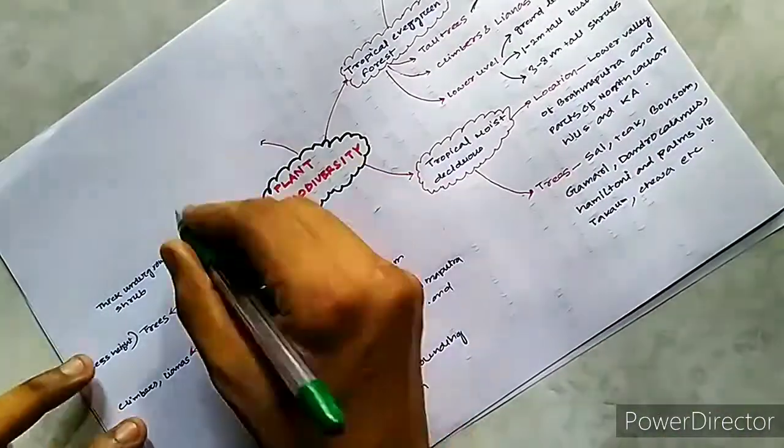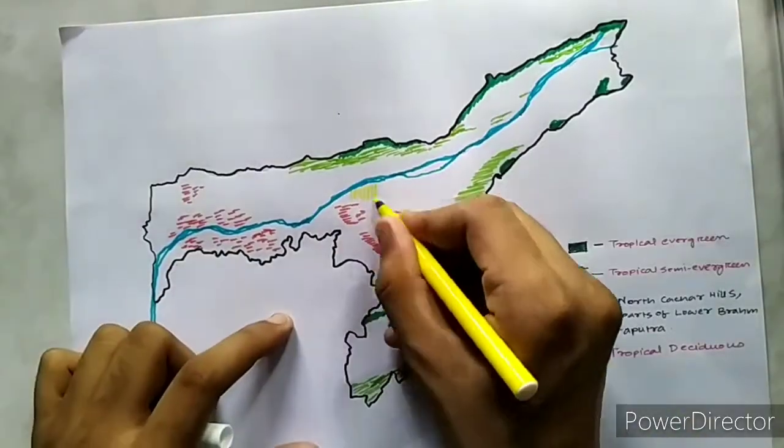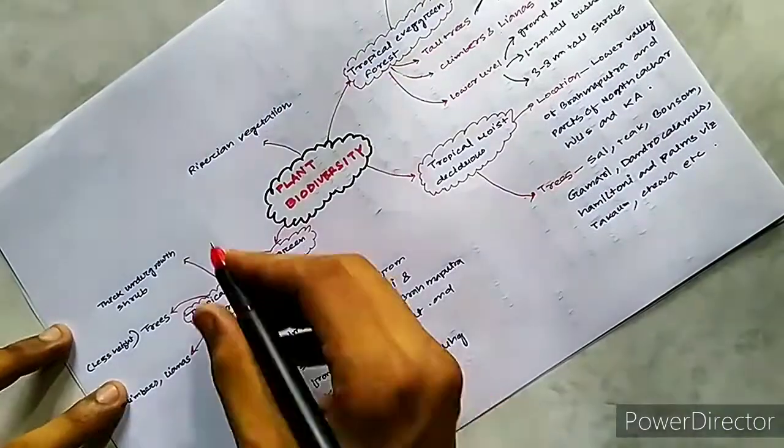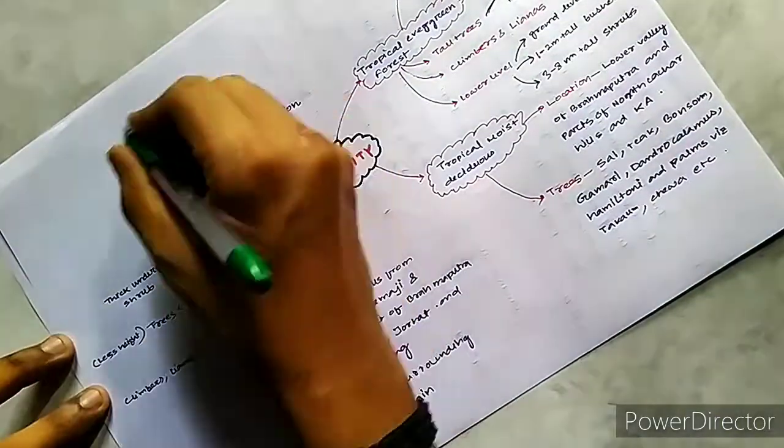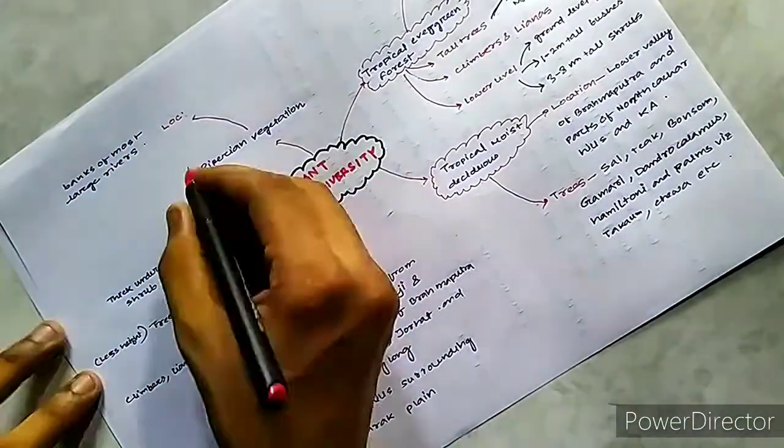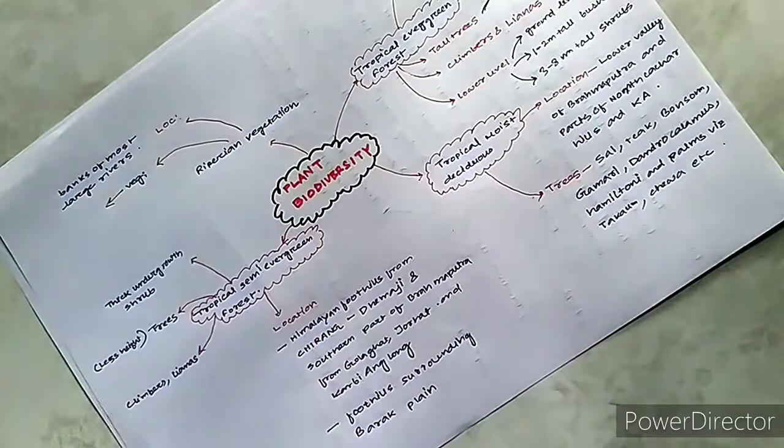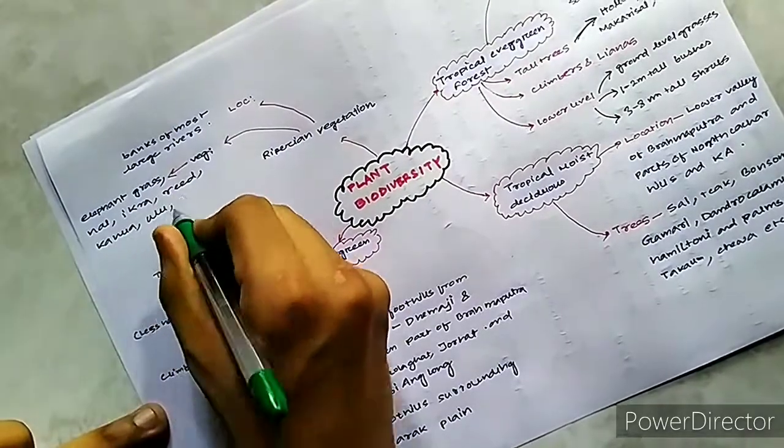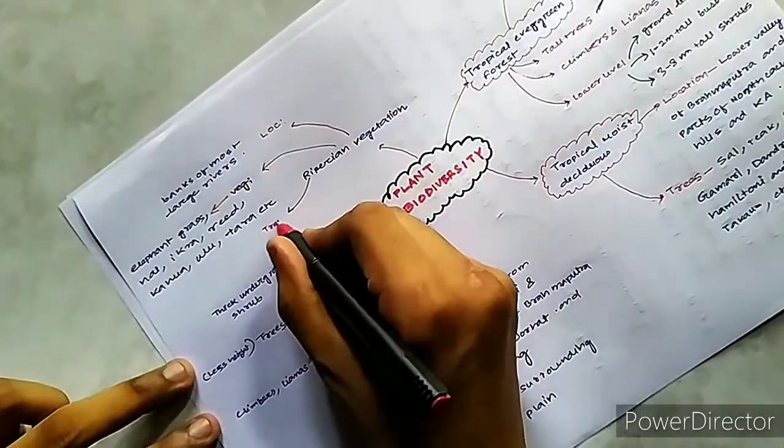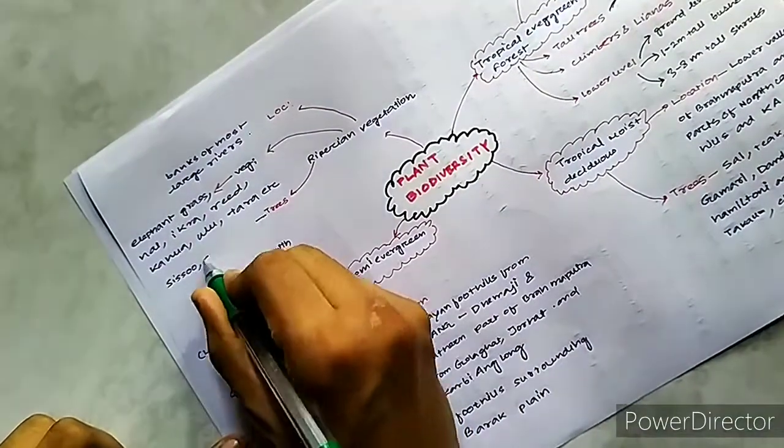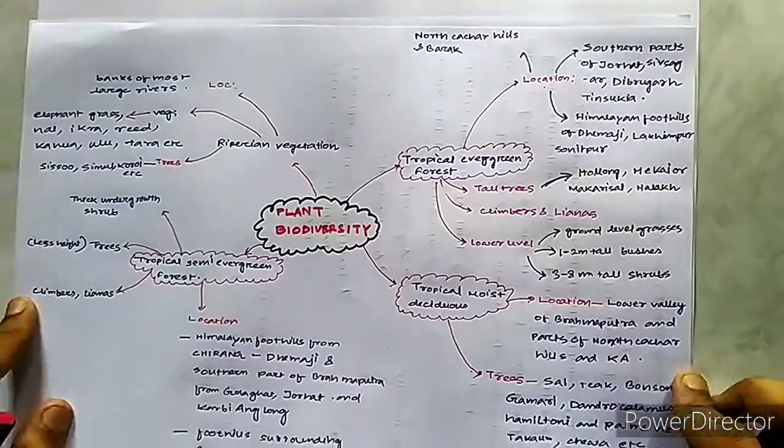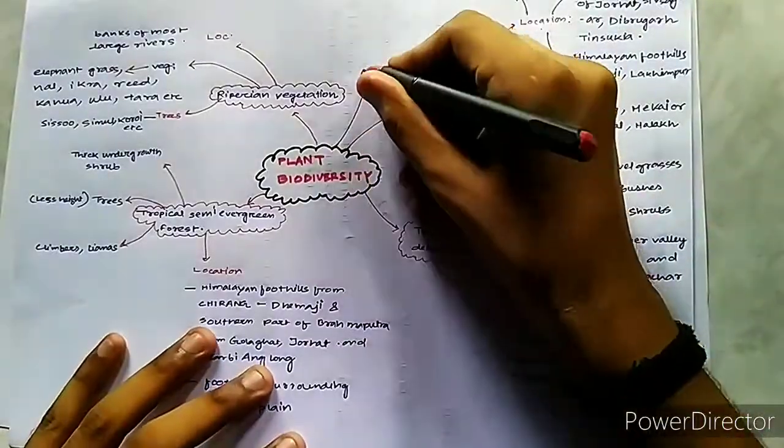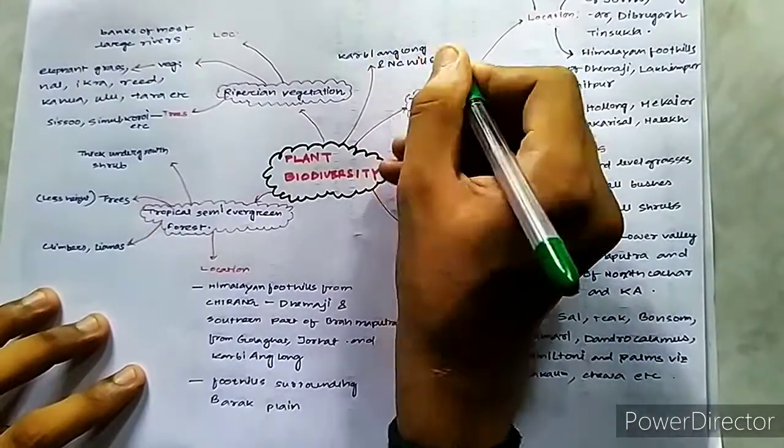The next is the riparian vegetation. The riparian vegetation is found along the banks of most of the rivers. There are also areas like elephant grass, Kanol, Ikra, reed, Kohua, Ulu, Tara, etc. And there are also common trees here including species of Ficus, Bombax, Trewia and Psidium, as well as Dalbergia species.